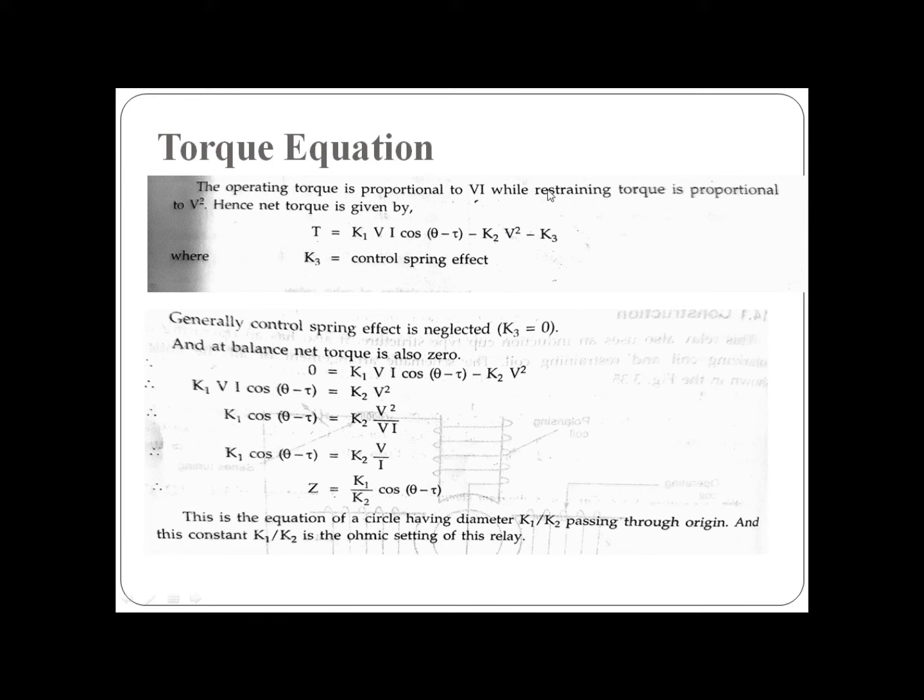Here K₃ is the control spring effect. Generally, control spring effect is neglected, so putting K₃ equal to 0, the equation becomes: at balance point, T = 0, which gives K₁VI cos(θ - τ) minus K₂V² equals 0.